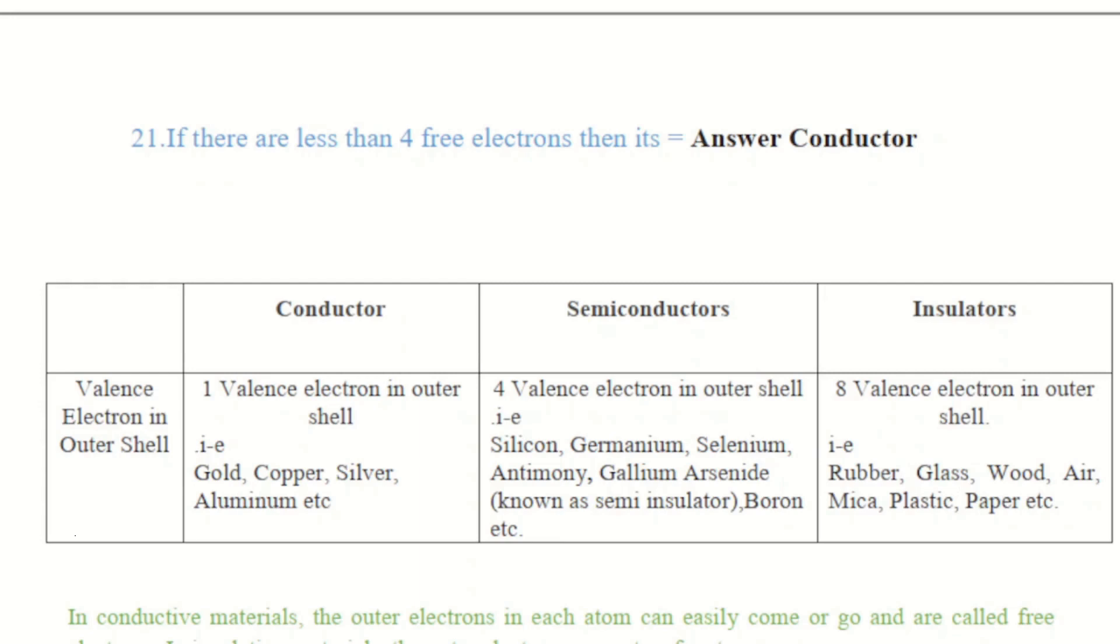That is less than 4. If there are less than 4 valence electrons in the outermost shell then there will be the conductor. If there are equal to 4 valence electrons in the outermost shell then it is said to be the semiconductor, and for the insulator there must be 8 valence electrons in the outermost shell.